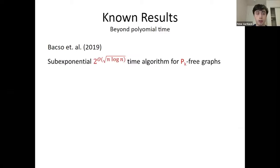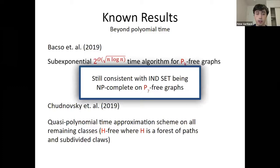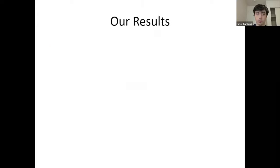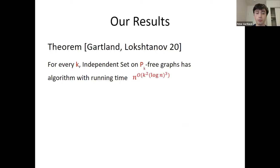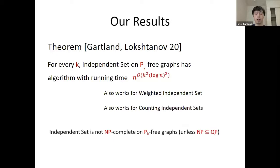Beyond polynomial time: Bożyk et al. (2019) gave a sub-exponential time algorithm for independent set on P_K-free graphs. Chudnovsky et al. (2019) gave a quasi-polynomial time approximation scheme for all remaining classes — H-free graphs where H is a forest of paths and subdivided claws. All these results were still consistent with independent set being NP-complete on P_7-free graphs. Our result is that for every K, independent set on P_K-free graphs has a quasi-polynomial time algorithm, also working for weighted independent set and for counting independent sets.